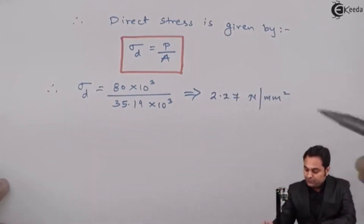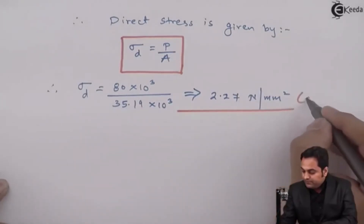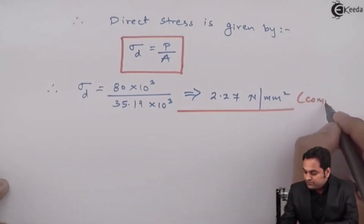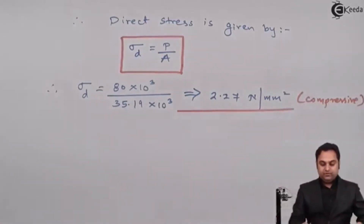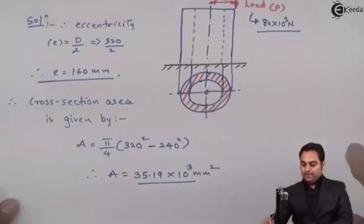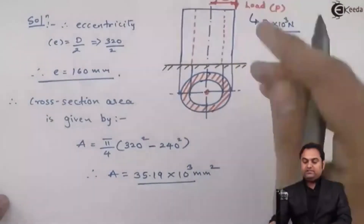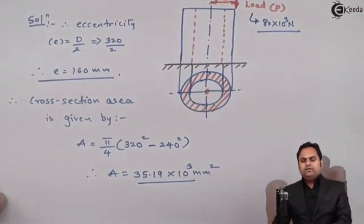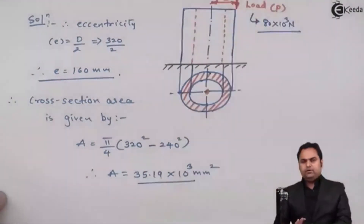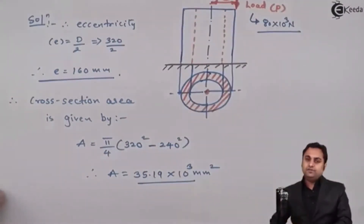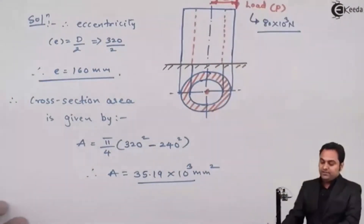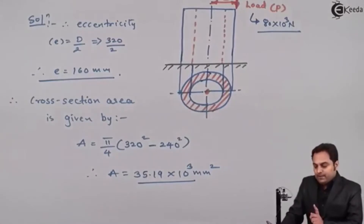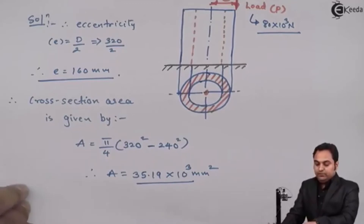Since this direct stress is positive it means it is compressive — in this chapter we take compressive stress as positive. If the load were at the center it would be axial, giving only compressive stress. But here the load is at a distance from center, so it is eccentric, meaning there will be both direct stress and bending stress.